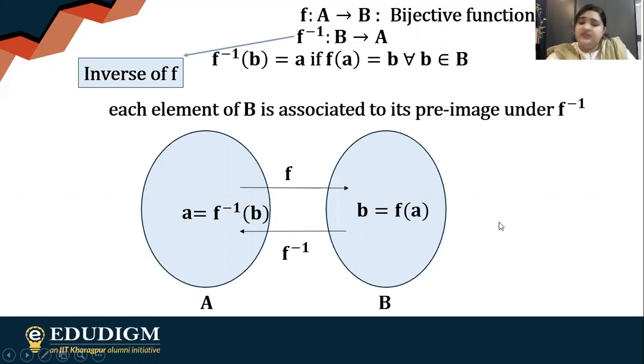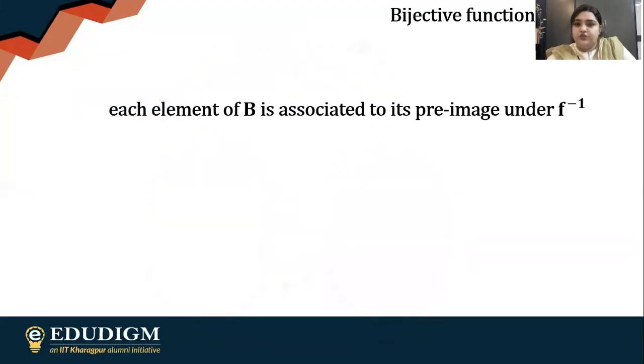Clearly we understand that whenever you have the function f inverse from B to A, B is the domain. So each and every element of the domain, which is B, is associated with its pre-image under f inverse. Now let's look at two things which are very important. The first one is pre-image. The next one is bijective function.